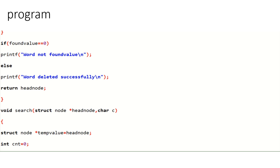When found value equals 1, it breaks out of the loop. Previous is updated to current during traversal. If found value equals zero, it prints 'word not found'. The node is deleted only when found value equals 1. It jumps to the else statement and prints 'word deleted successfully', then returns the head node because it deletes the first matching node.